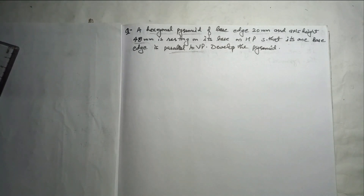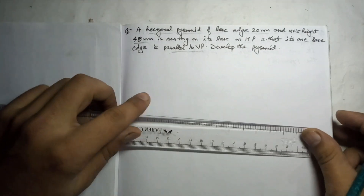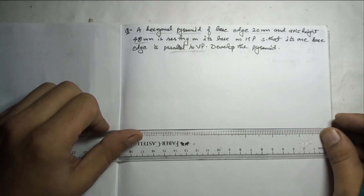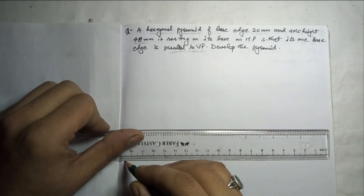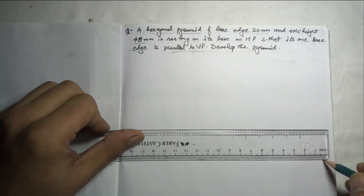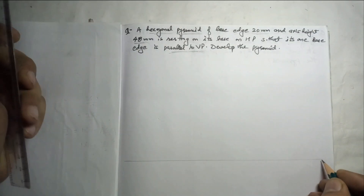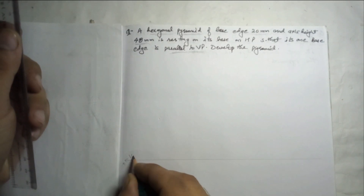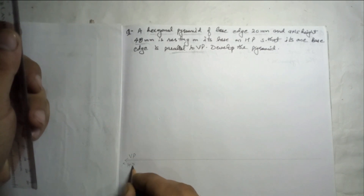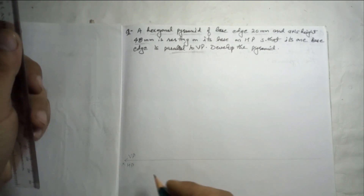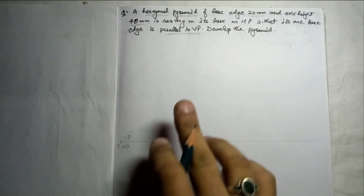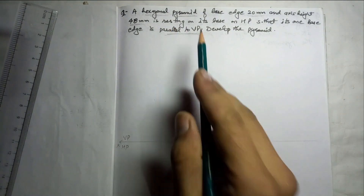We will solve it just similar to the previous question. I have solved one question for the development of a square pyramid where I explained each and everything and gave a model of how we are going to develop the radial line. So here I will directly go for the question.